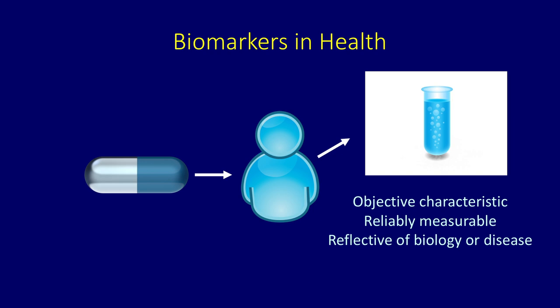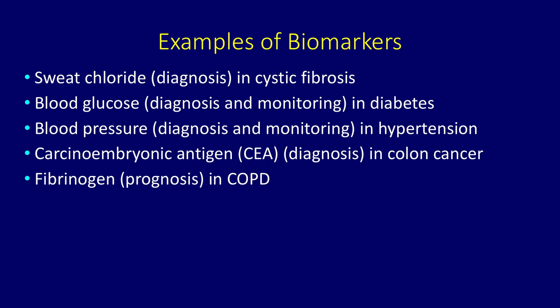Examples of biomarkers include sweat chloride, which can be used in the diagnosis of cystic fibrosis; blood glucose, which can be used for diagnosis and monitoring of patients with diabetes; blood pressure, for diagnosis and monitoring in patients with hypertension; CEA, which can be used in the diagnosis of patients with colon cancer; and fibrinogen, which can be used to determine the prognosis of patients with COPD.